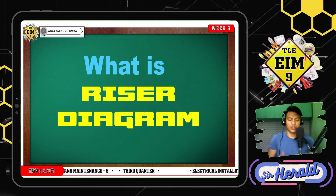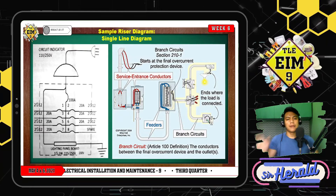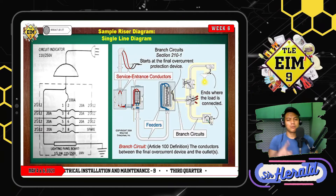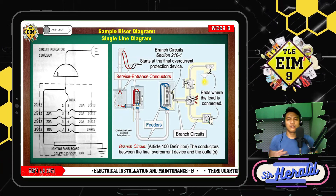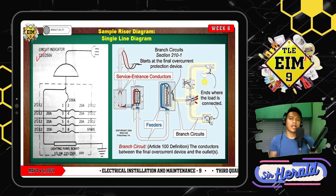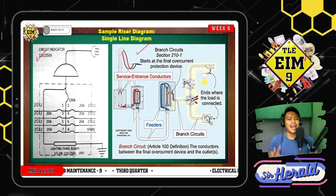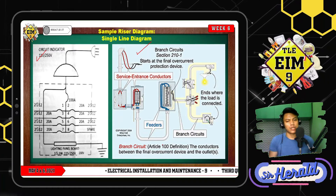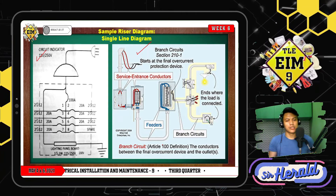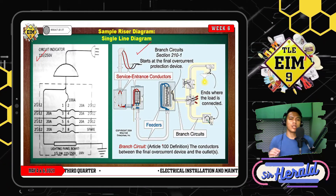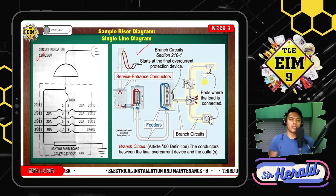Let's proceed to the riser diagram we are going to discuss. In this slide, you can observe that we have two images. The first image is the one we also used in our first video — if you haven't watched that first video, it's better to watch it first to better understand this discussion. This part is what we call the riser diagram, and this part is what we call the pictorial diagram. This shows the concept of what the riser diagram looks like in its physical appearance, so we can identify: this is the circuit breaker part, this is the meter, and so on.